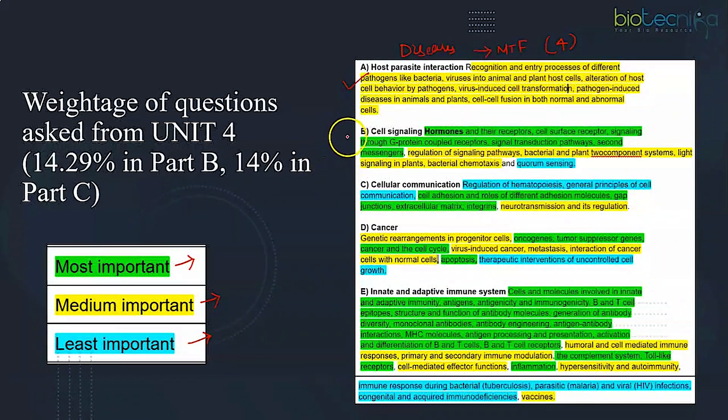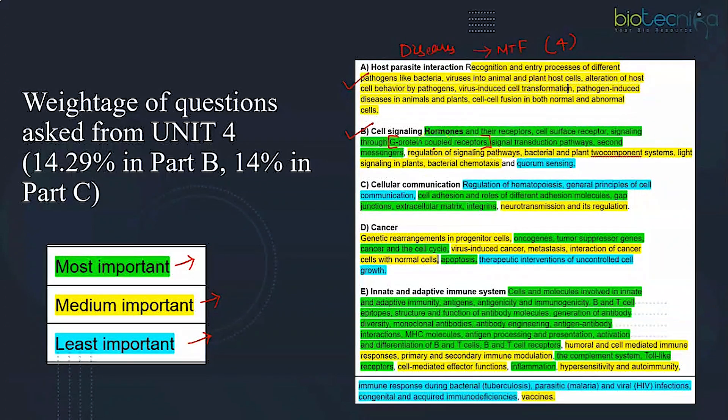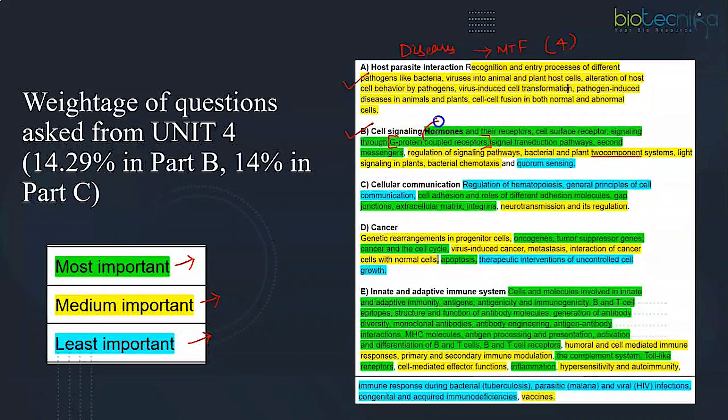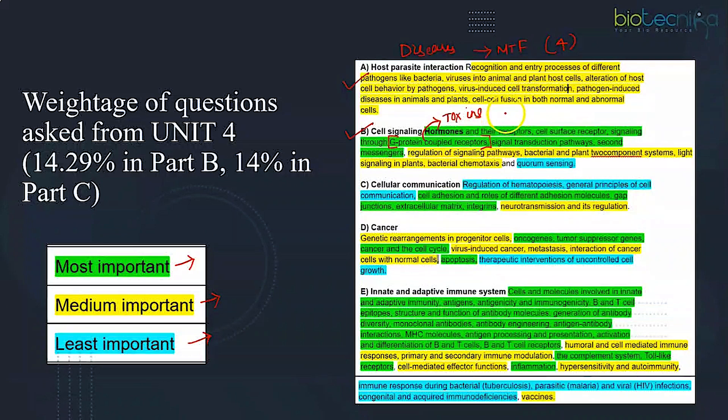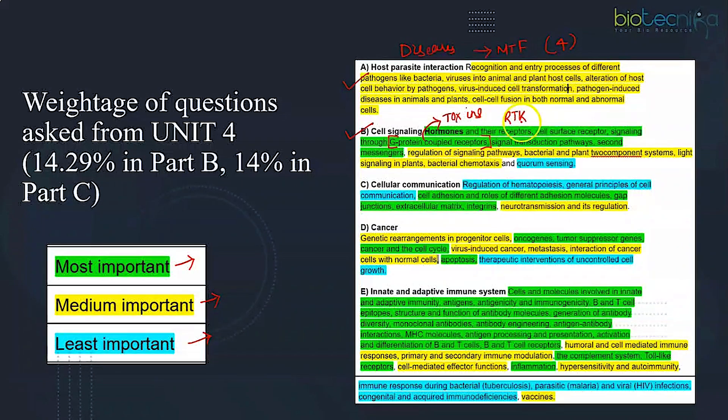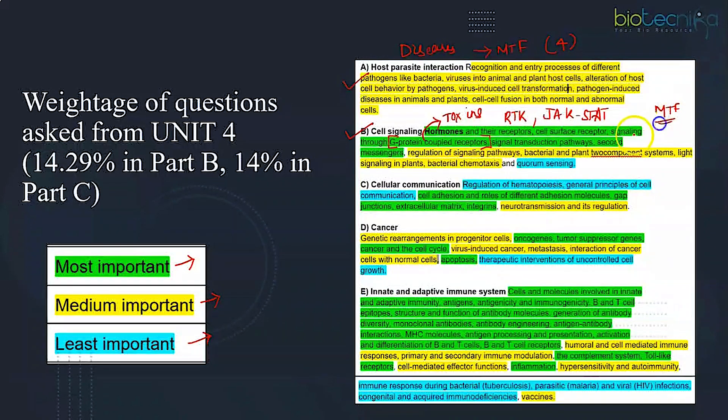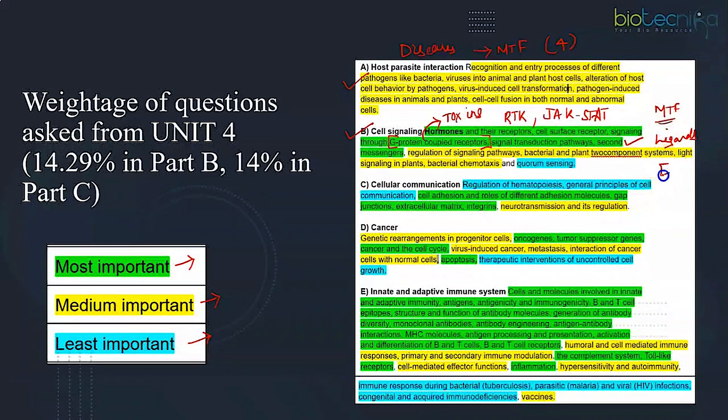Then we have the second which is the most important subunit from Unit 4, that is cell signaling. From here, the largest family of proteins, GPCR, is a very important topic. Always questions do come from this part, and even certain toxins related to GPCR are also being asked in the exam. Apart from GPCR, you can expect questions from RTK, that is tyrosine kinase, JAG-STAT pathway, and match the following based on second messengers, ligands, and effector proteins.